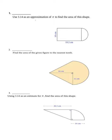This composite figure is made up of a rectangle and a semicircle. Always write the shapes and formulas. For a semicircle, you use the area of a circle formula — area equals pi times radius squared — but since it's a semicircle, half a circle, you divide by 2.